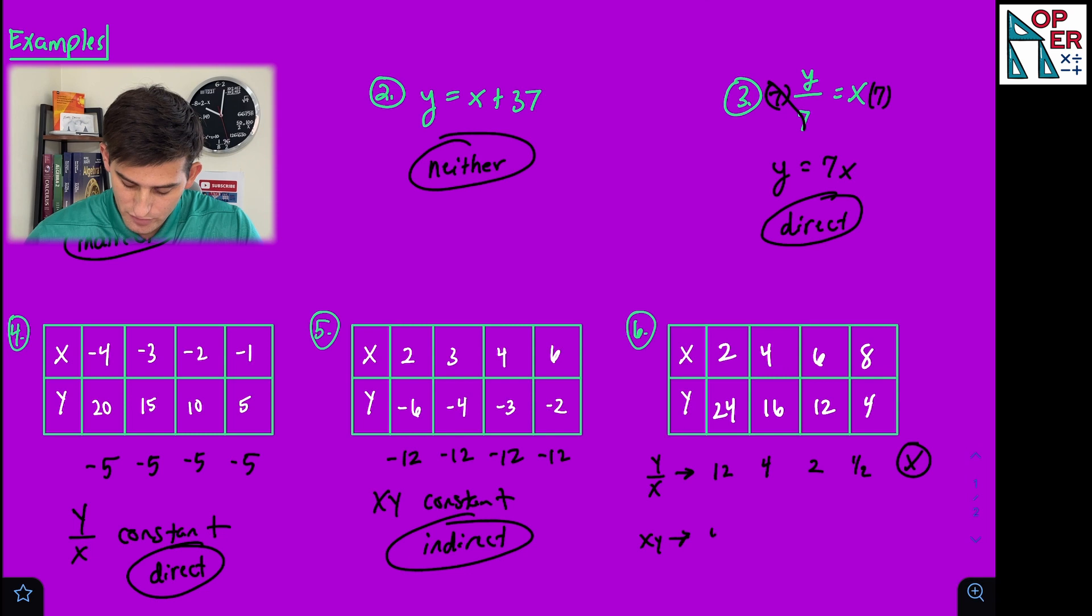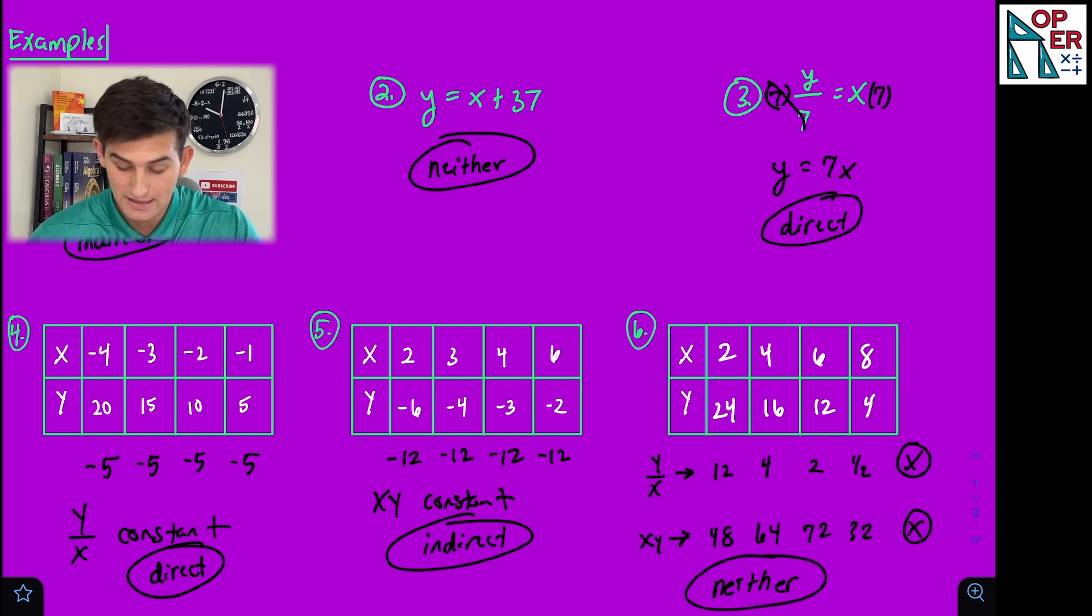24 times two would be 48, 16 times four is 64, 72, and 32. We notice that the products are not constant, so this would be an example of neither. And that's how you can classify between direct and indirect variation.